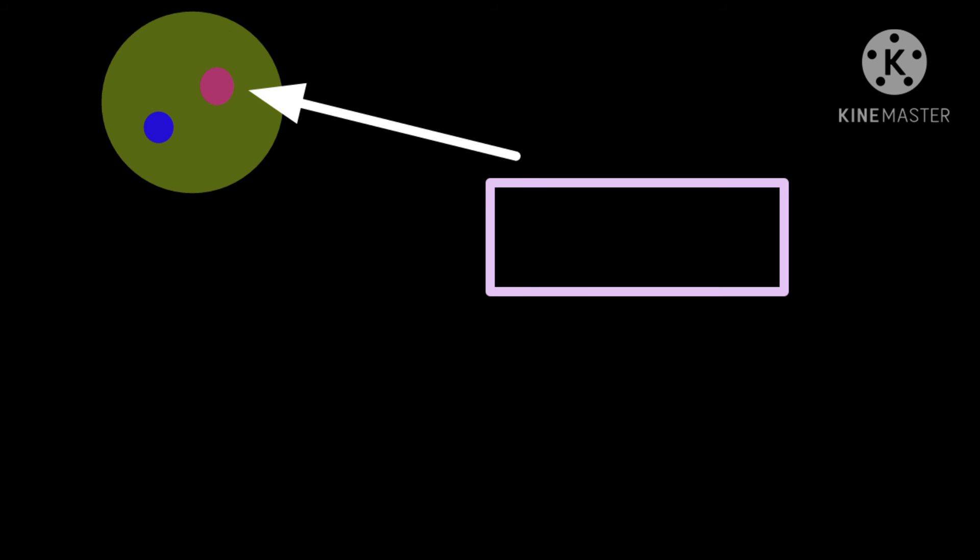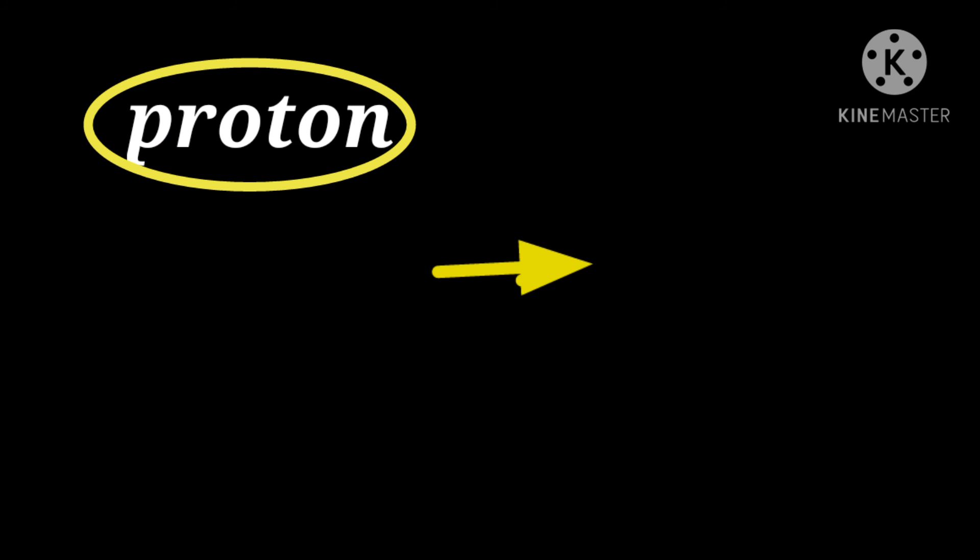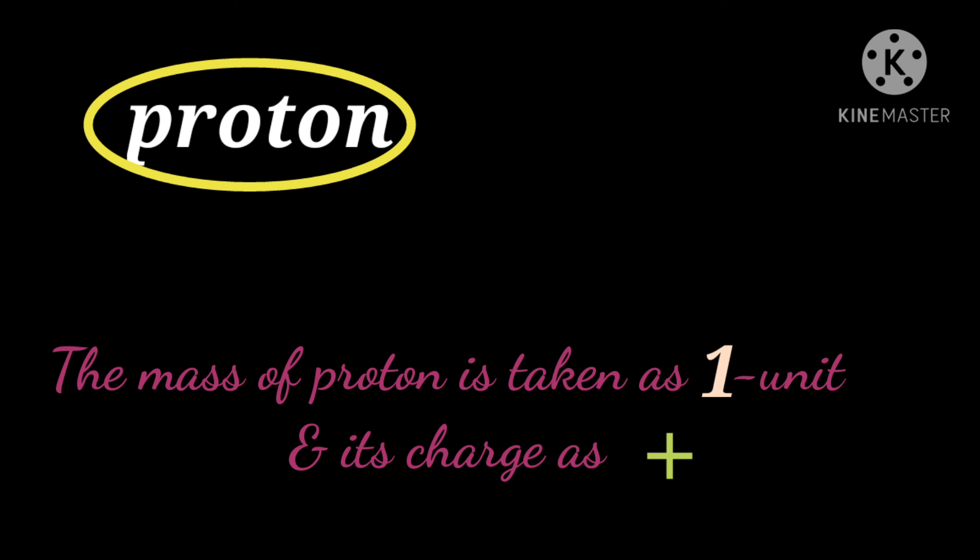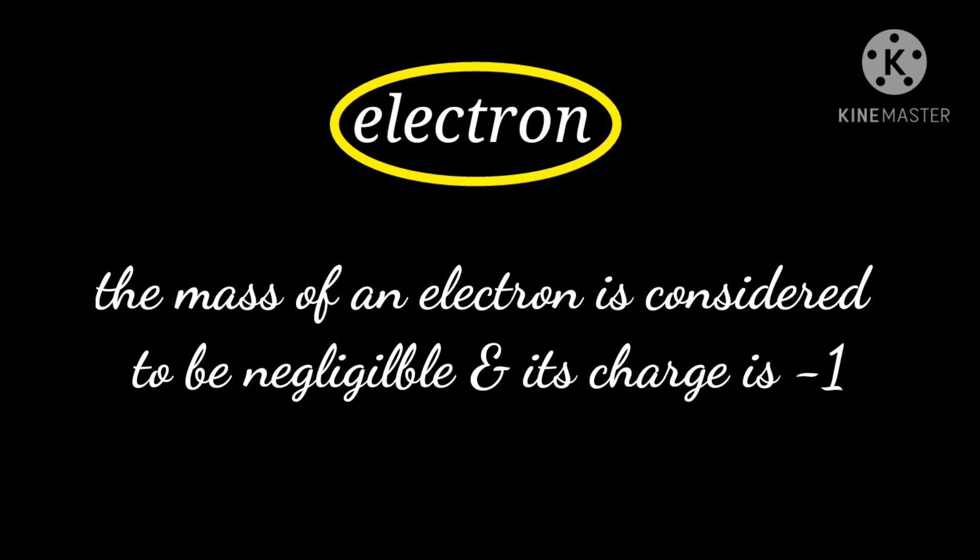So, in general, an electron is represented as e and a proton as p. The mass of the proton is taken as 1 unit and the charge as plus 1. The mass of the electron is considered to be negligible and its charge is minus 1.